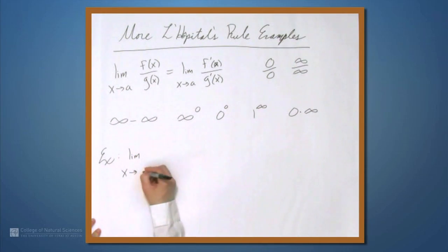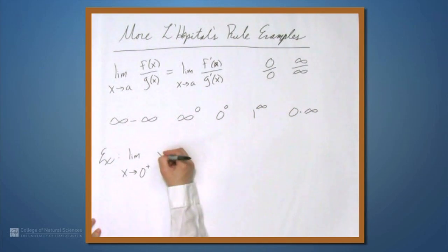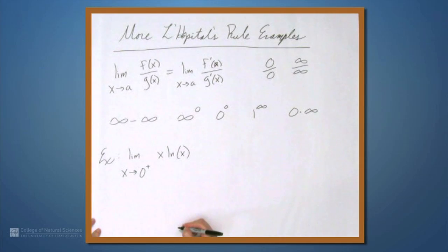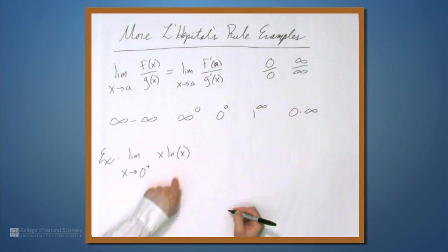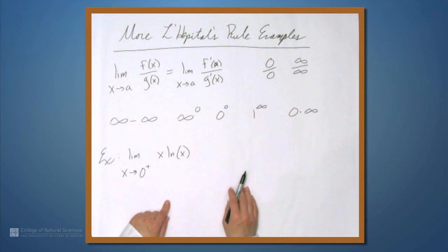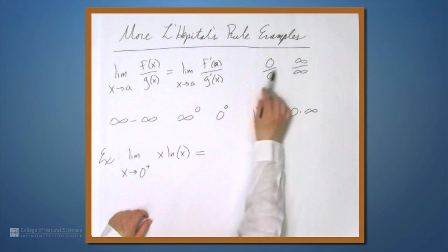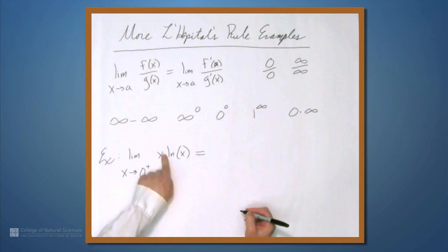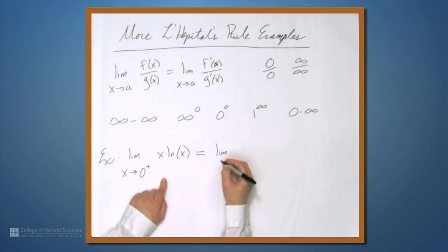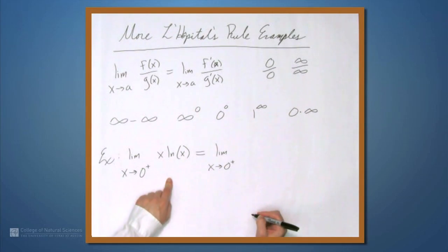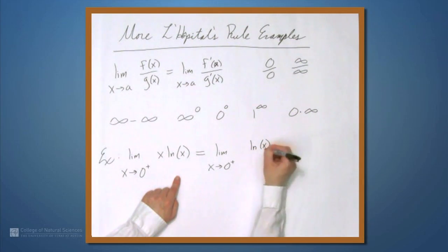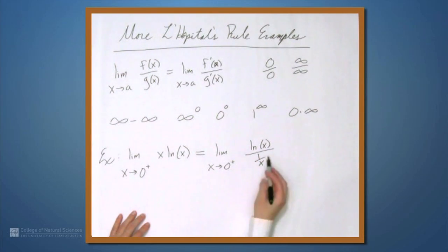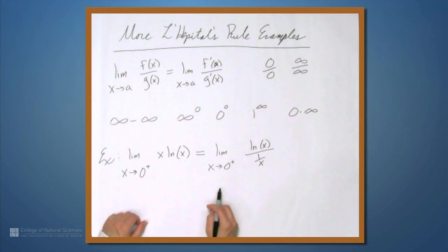Let's look at the limit as x approaches 0 from above of x times the natural log of x. As x approaches 0, the first term — which is just x — certainly approaches 0, and the second term, natural log of x, approaches negative infinity. So we have something of the form 0 times infinity. This is fairly straightforward to rewrite as a ratio: we can move either x into the denominator or the natural log into the denominator. So we get either x over (1 over ln x) or ln(x) over (1 over x). I'd rather do the second, because 1 over x is going to be easier to differentiate than 1 over ln(x).